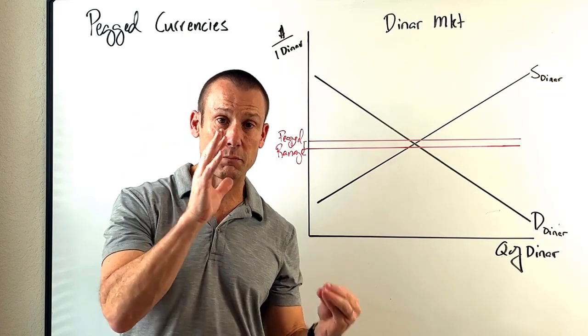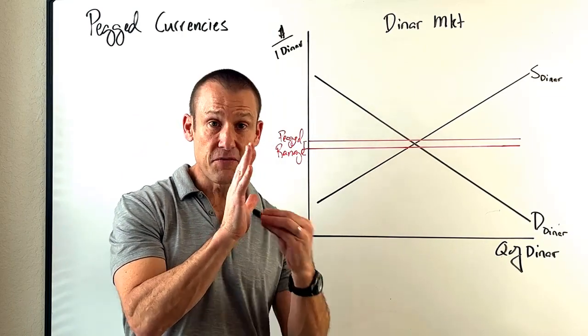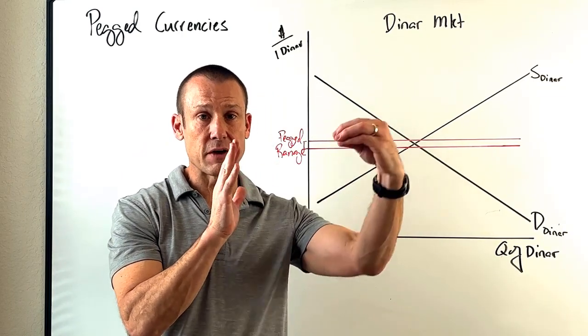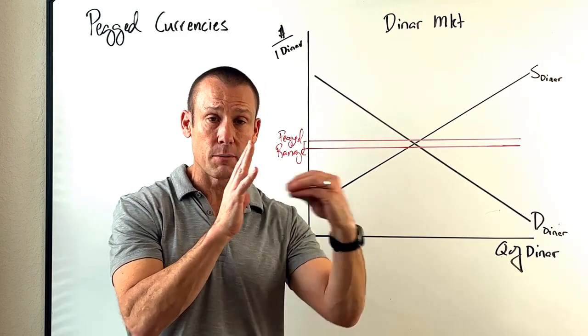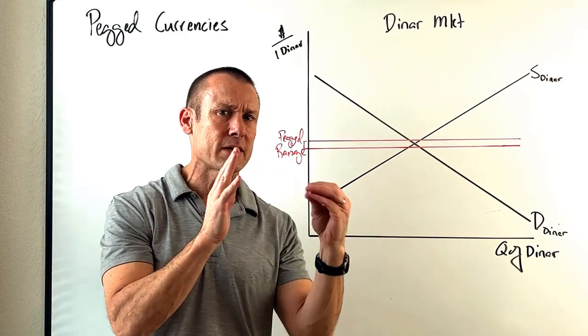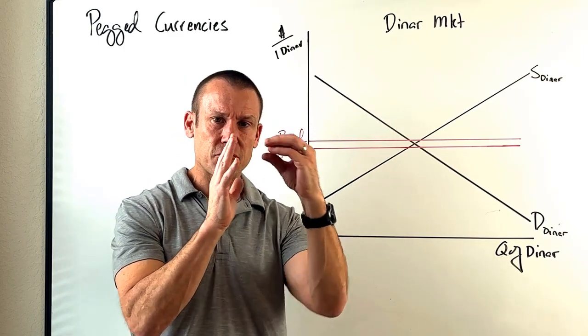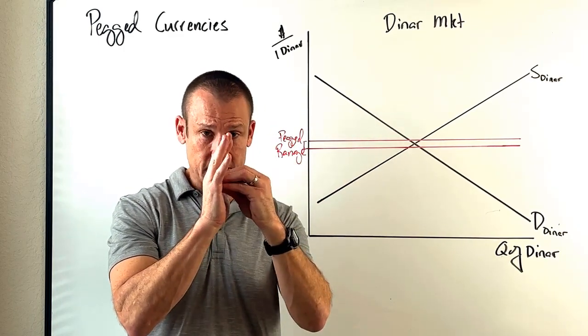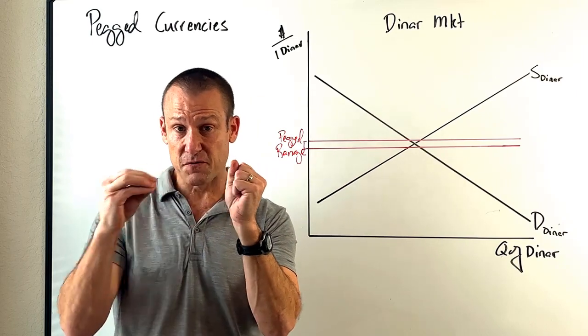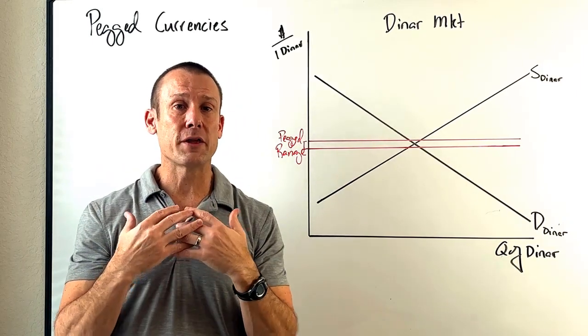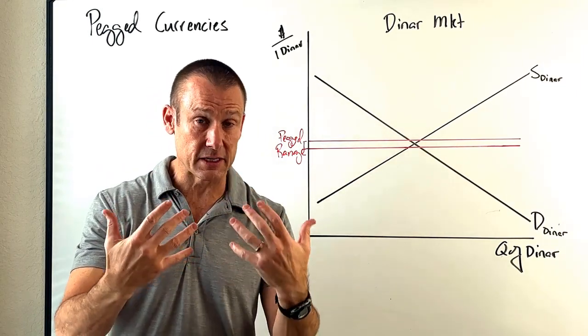And then other countries basically were supposed to then fix their currency value to the dollar. Now I might say pegged, or I might say fixed, but I'm going to say fixed right now, even though it sounds very peggish to me. Why is it fixed? Because they're fixing themselves to a currency that is fixed to gold, right? So we call that a system of fixed exchange rates.